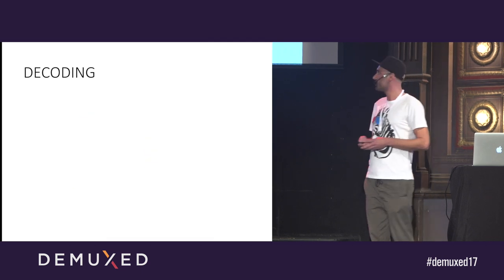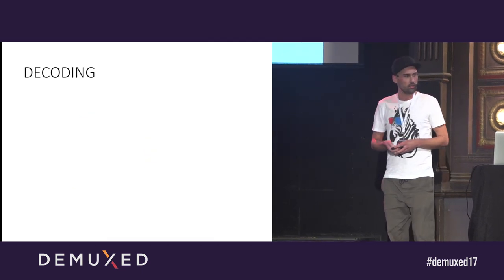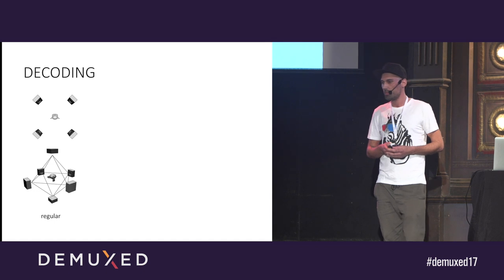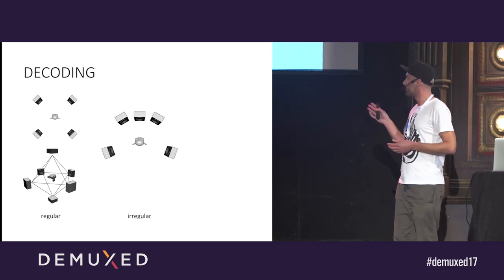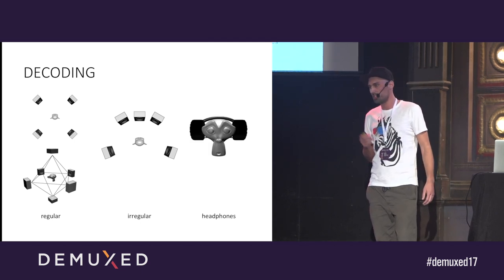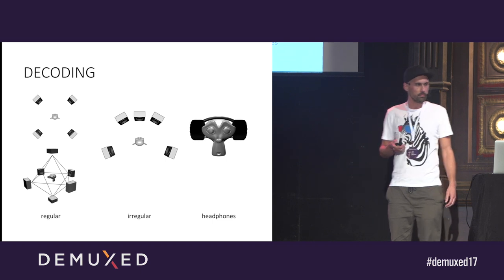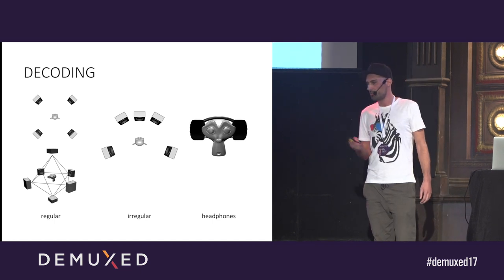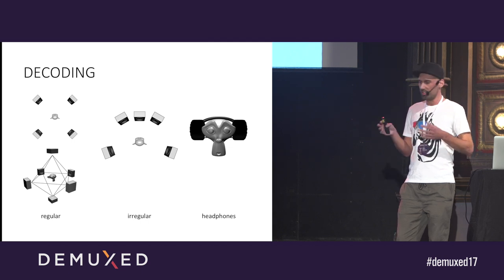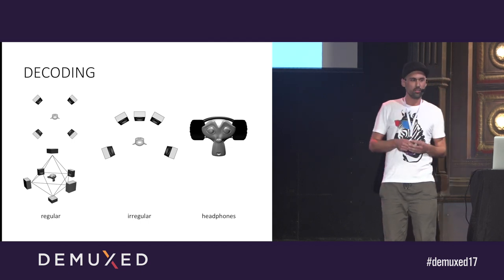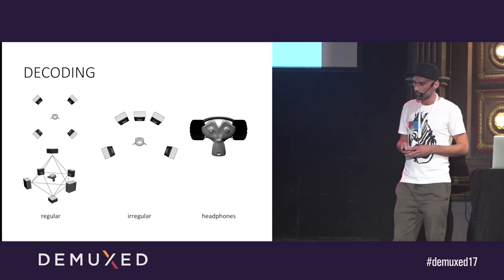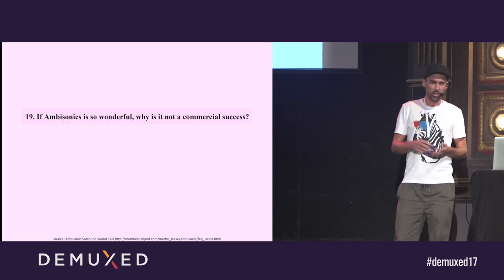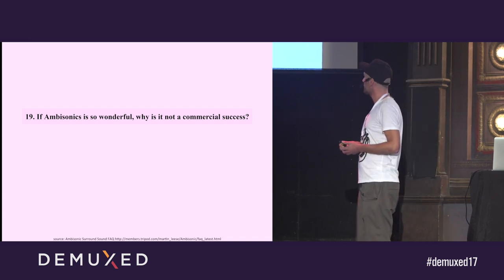To play back ambisonic audio, we need to decode it, and for that we need to know the target speaker setup. Decoding works well for regular speaker setups, for irregular setups like 5.1, and of course for headphones too — because that's just another regular speaker setup. There's still one problem though: we get a plain stereo stream out of there, which we locate inside our head. So to improve the system and make it seem like sound is coming from the outside, we actually need to take a look at how we localize sound.